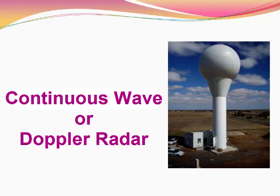Similarly, in the radars also, we have two types. One is the pulsed radar which we discussed already, and the other one is the Continuous Wave Radar or in short we call it as CW radar. In this class, we are going to see the details about this CW radar and also a comparison between the CW radar and the pulsed radar.